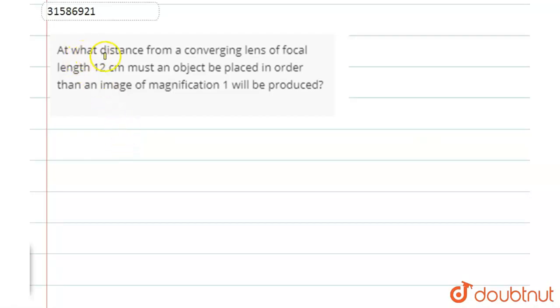Question is, at what distance from a converging lens of focal length must an object be placed in order that an image of magnification 1 will be produced? If you want to see the magnification 1, we will find it here.